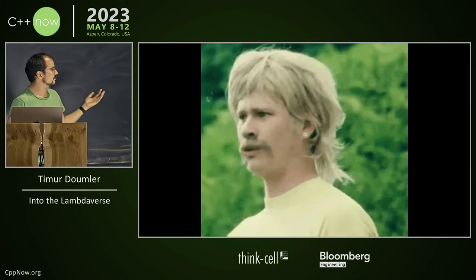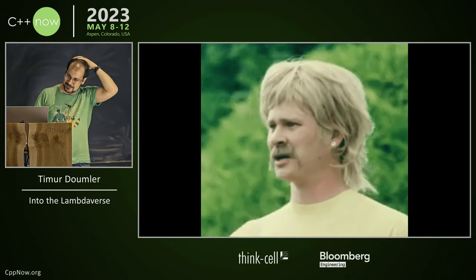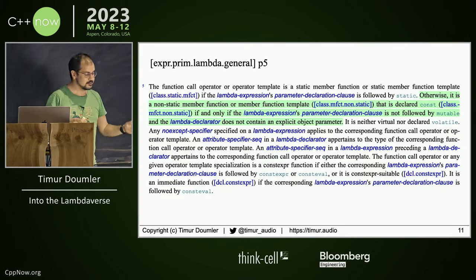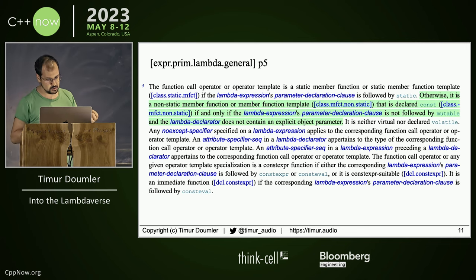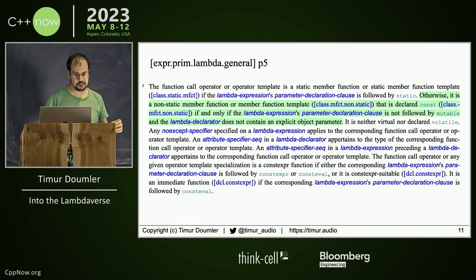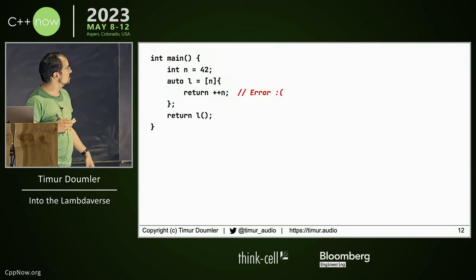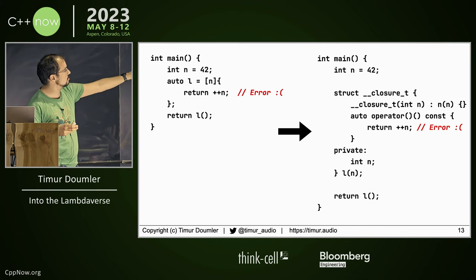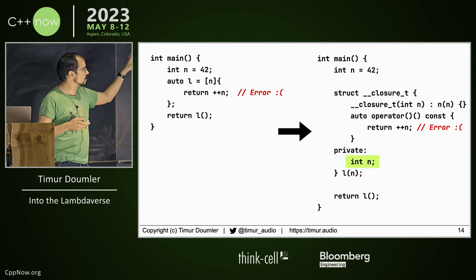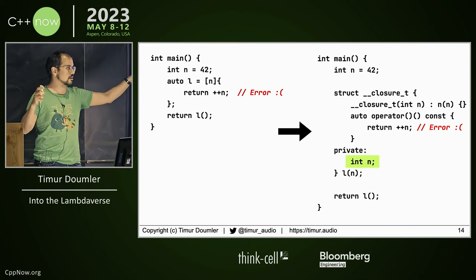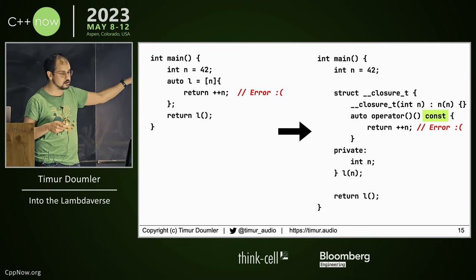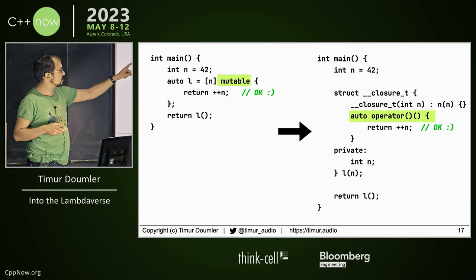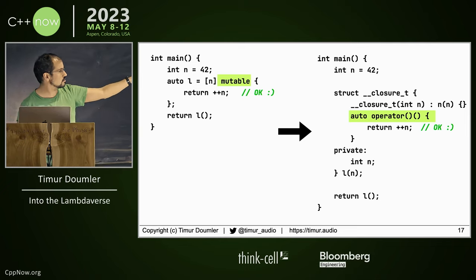So I looked into this. The first part kind of makes sense. The closure type has a function call operator, and the standard says that operator() is declared const if and only if the lambda expression parameter declaration clause is not followed by mutable. That means the compiler translates this into something like this — because we don't have mutable, this implicit member in the closure type is not going to be const, but the operator is going to be const. And that's why you can't increment n.